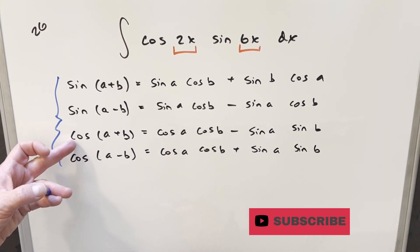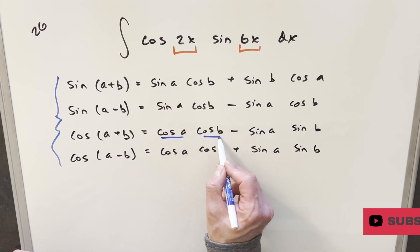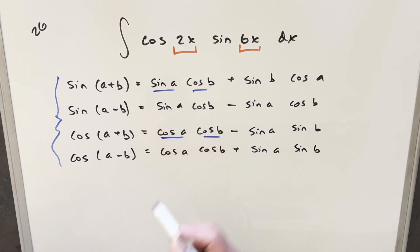And so the only thing you really have to remember is like with cosine, it's always like cosine, cosine. And with sine, it's going to be sine, cosine.